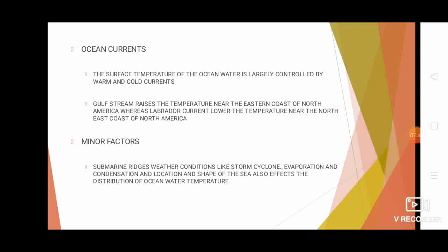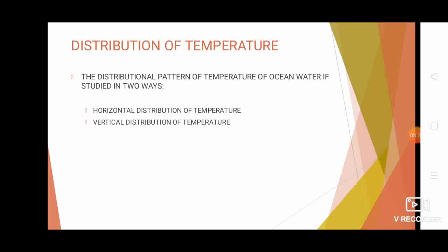Ocean current is another factor. Warm currents raise the temperature of ocean water while cold currents lower it. For example, the Gulf Stream is a warm current that raises temperatures near the eastern coast of North America, while the Labrador current, being a cold current, lowers temperatures near the northeast coast of North America. Minor factors include submarine ridges, weather conditions like storms and cyclones, evaporation and condensation, and the location, shape, and size of the sea.